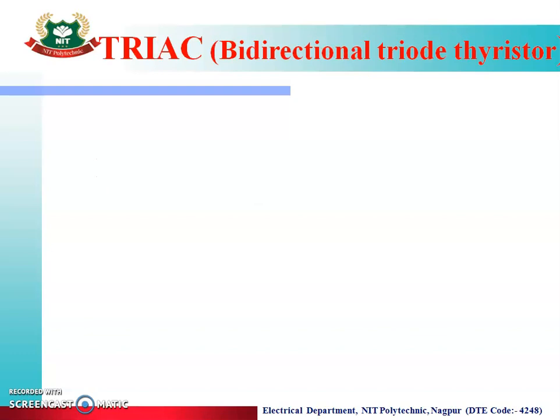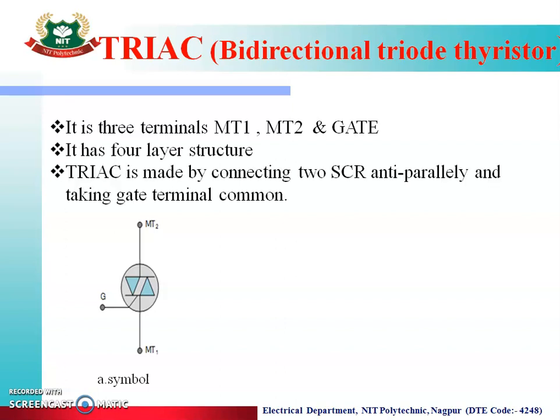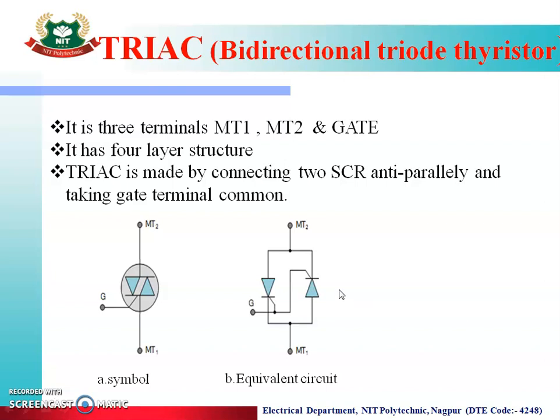TRIAC is a bi-directional triode thyristor. This is the symbol of TRIAC. It has three terminals: MT1, MT2, and a gate terminal, and it has a four-layer structure. TRIAC is made by connecting two SCRs in anti-parallel and taking the gate terminal common.